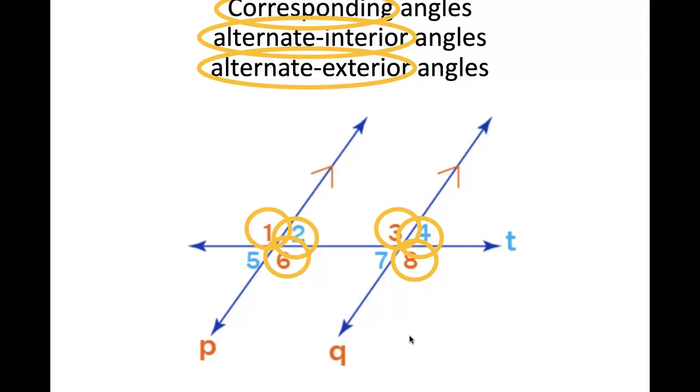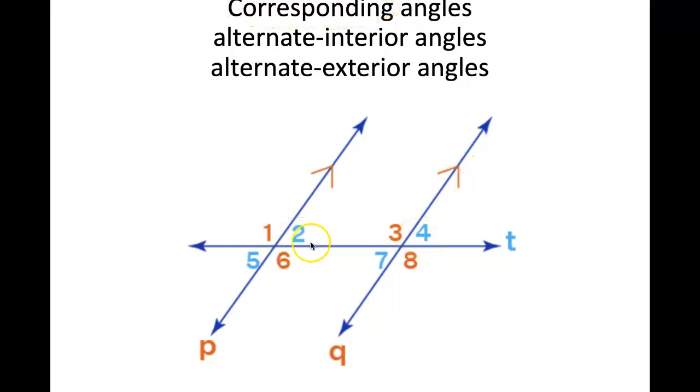Now going back to our parallel lines, we have other terms that we need to be familiar with, such as corresponding, alternate interior, and alternate exterior angles. So let's look at this one at a time. Corresponding angles are two angles that are in the same relative position. So these two lines are parallel, P and Q. Notice the little arrowheads on the line, so that's telling me they're parallel. So that means angle 2 is corresponding to angle 4. It's the same relative position. Also corresponding would be 1 and 3, 5 and 7, 6 and 8. They're in the same relative position.